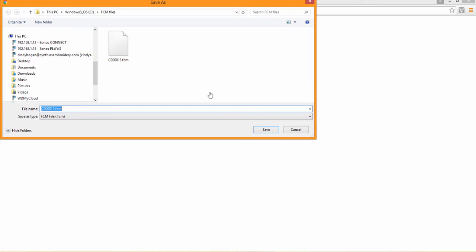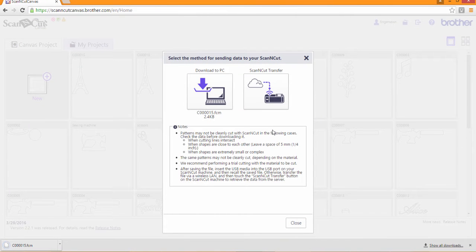Choose the Computer option. Locate the file folder on your computer that you would like to download to and then press Save. Press Close to close the window.